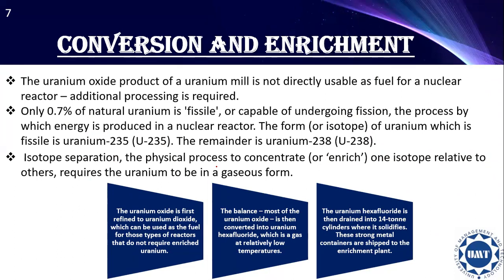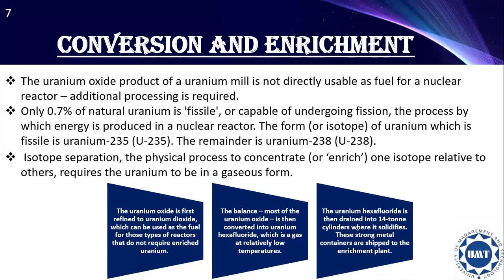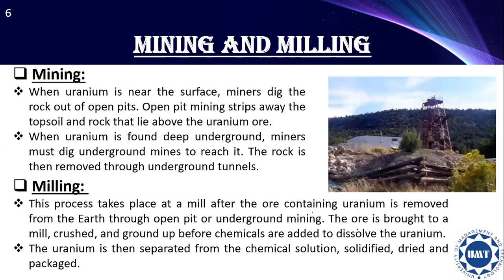Isotope separation — the physical process to concentrate one isotope relative to others — requires the uranium to be in a gaseous form. So the uranium oxide is first refined to uranium dioxide, and then most of the uranium dioxide is converted into uranium hexafluoride, which is the final converted form. It is then drained into 14-ton cylinders where it solidifies. There is a distinct product at the end of both the mining and the milling steps.